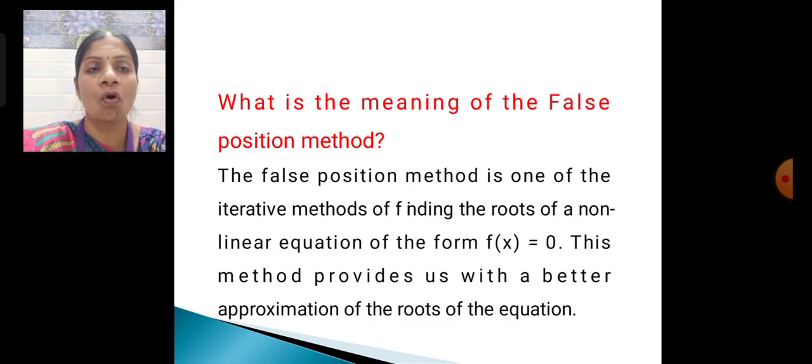Next we see the False Position Method. What is the meaning of the False Position Method? The False Position Method is one of the iterative methods of finding the roots of a non-linear equation of the form f(x) = 0. The method provides us with a better approximation of the roots of the equation.